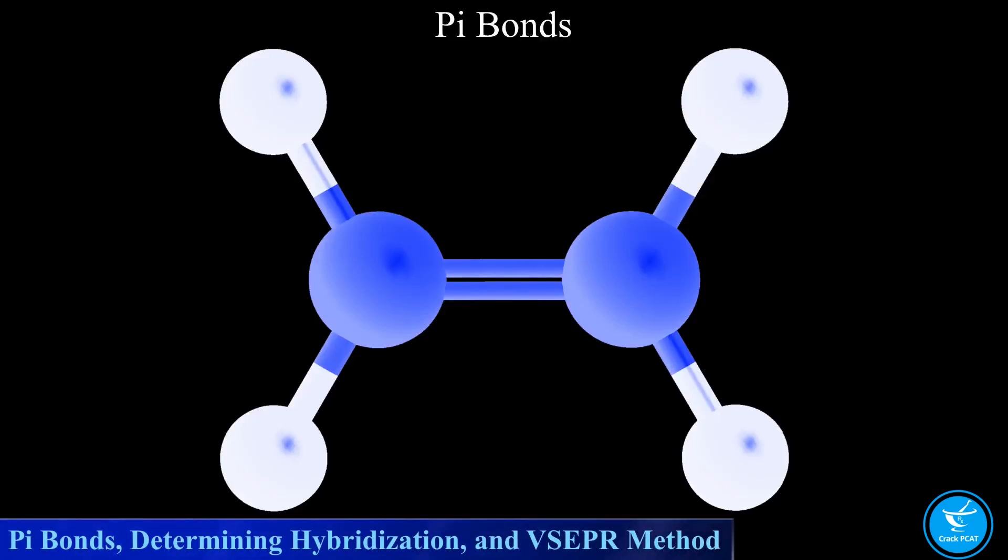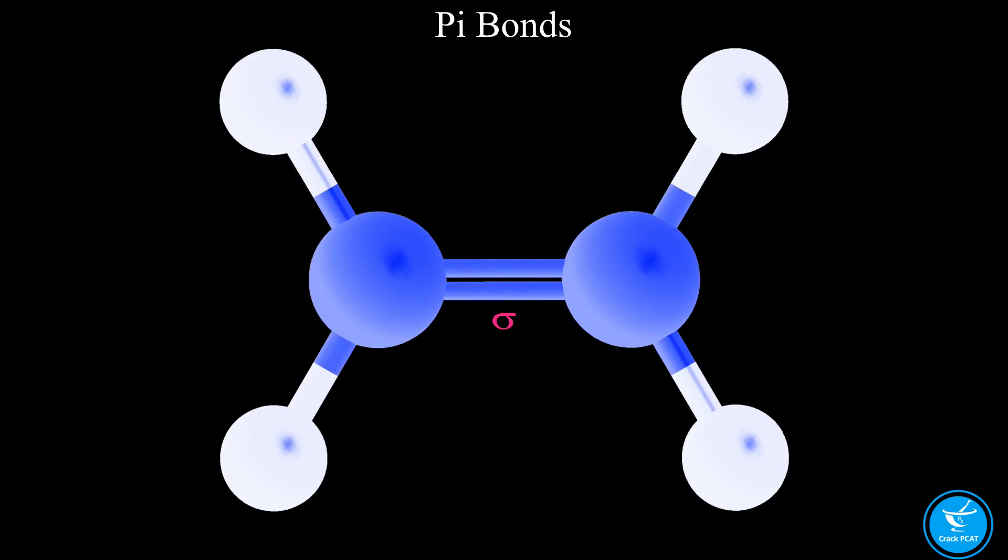When multiple bonds form between two atoms, the initial bond is the sigma bond. When a second or third bond forms, these are referred to as pi bonds.